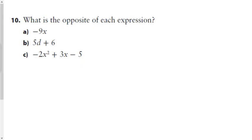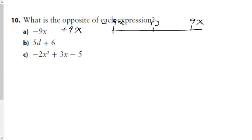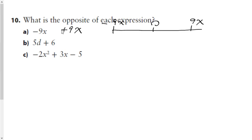Question 10: what's the opposite of each expression? A negative 9x has a positive 9x as its opposite. On a number line, 9 times a number — its opposite is negative 9x. For 5d minus 6, the opposite is negative 5d plus 6. And the opposite of the last expression will be a positive 2x², a negative 3x, and a positive 5.